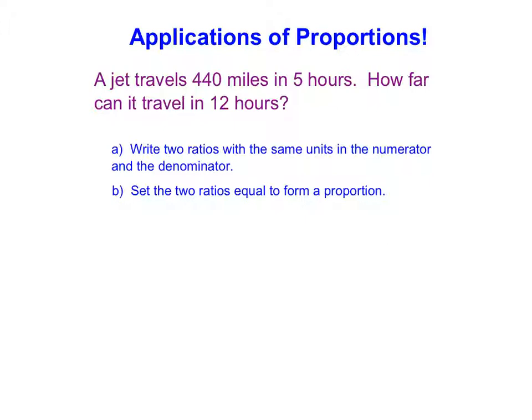So if we read through here, it says a jet travels 440 miles in five hours. How far can it travel in 12 hours? Now, I know that this is proportional because the jet is going to be going the same speed the whole time. Its miles and its number of hours are a ratio that if we were to simplify it down completely, they would simplify to the same value.